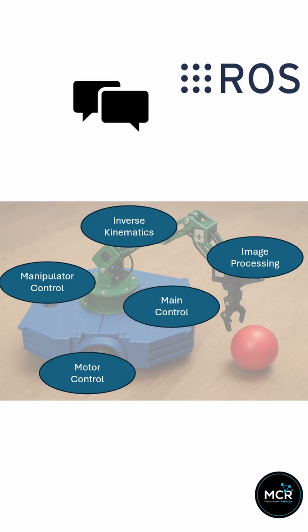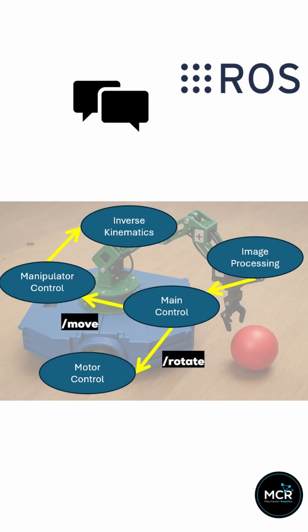Now, how do these nodes chat? Through topics. Think of topics like different radio channels. One node publishes information to a topic, and other nodes subscribe to that topic to receive the info. It's a bus for nodes to exchange messages. For example, our image processing node publishes image data to an image topic, and our control node subscribes to it to get that data. This is one of the main ways data moves between different parts of the system.